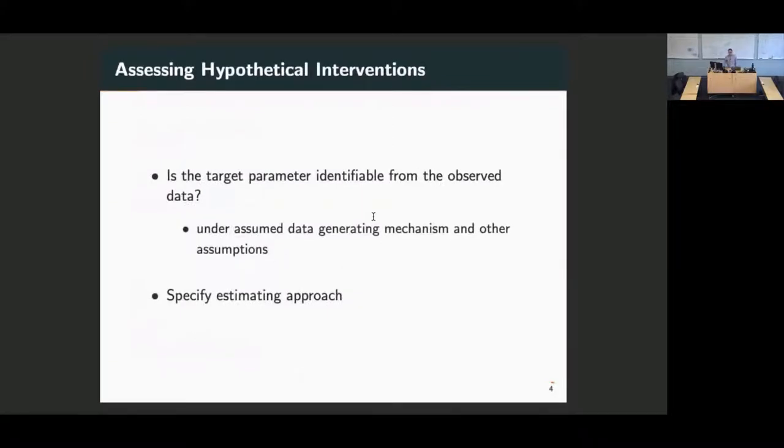We have observational data. We don't have a randomized experiment, even though we're trying to analyze it as if we have. What we want to ask ourselves is, is this target parameter of interest that we have in mind identifiable from the observed data? We're going to have some assumed data generating mechanism that gave rise to the observed data and also the assumptions that need to hold in order for us to interpret whatever associations we generate from those data as causal. Once we have those assumptions in place, we specify an estimating approach. Because depending on those assumptions, some approaches may be more appropriate than others.